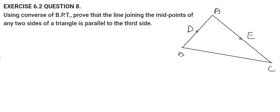Further, it says that the line joining these two points... what we know here is that AD is equal to BD, also we know that AE is equal to EC, and what we have to prove here is DE is parallel to BC.